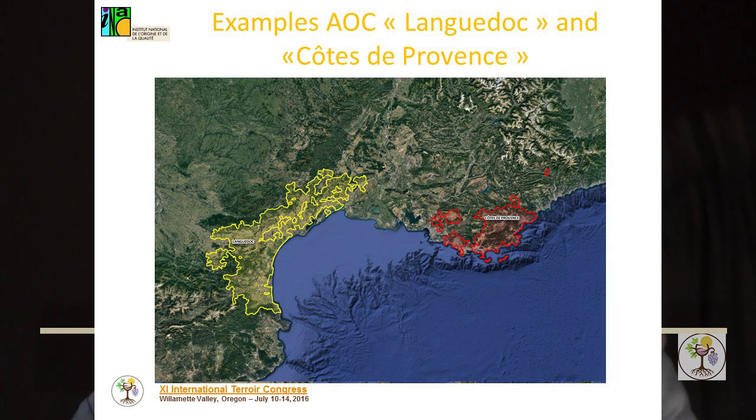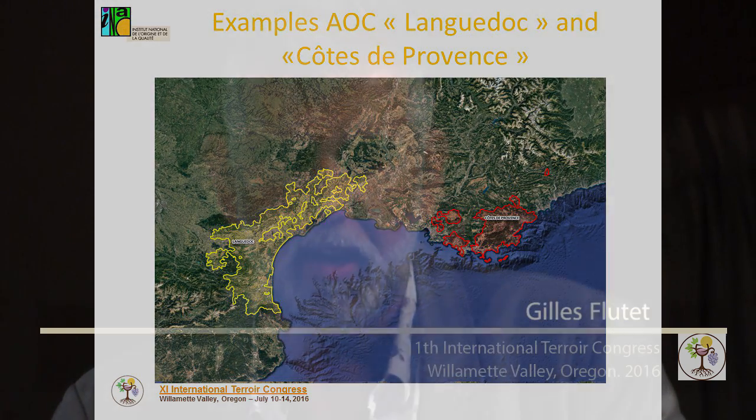These two regions are quite similar: both are in the south of France, both have an important coastline, a Mediterranean climate, and four CGDs recognized in the same period. They are also good holiday destinations.